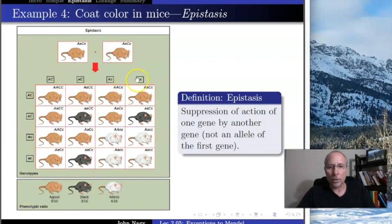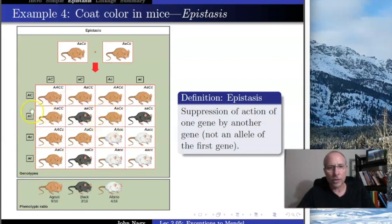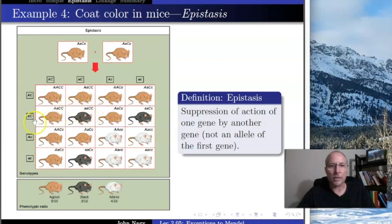Each box in the Punnett square represents a sperm fertilizing an egg. For example, one combination gives big A little a, big C little c — an agouti. But another makes little a little a, big C big C: since they're big C big C they make melanin, and little a little a means black is recessive, so this individual is black.